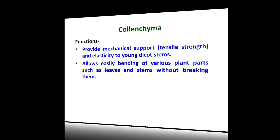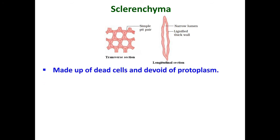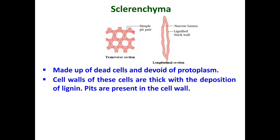Sclerenchyma is made up of dead cells as they do not have protoplasm. The cell wall of sclerenchyma cells is thick due to the deposition of an organic substance known as lignin — such lignin-containing cell walls are also known as lignified cells. Since lignin is unequally distributed in the cell wall, pits are also present. The cells of sclerenchyma do not have intercellular spaces.